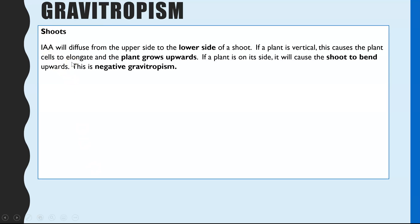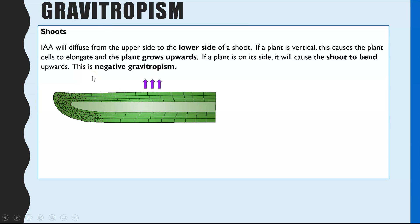Gravitropism — in the shoots, IAA will again diffuse from the tips where it's made towards the lower side of the shoot, so IAA diffuses towards the pull of gravity. If the plant is vertical, IAA just diffuses down the shoot and the cells at the bottom elongate, causing the plant to grow upwards. As an experiment to show gravitropism, you could place a plant in a completely dark room and lie it on its side; the IAA produced in the tip of the shoot will diffuse to the side nearest the bottom due to gravity, those cells elongate, and the shoot bends upwards — this is negative gravitropism.